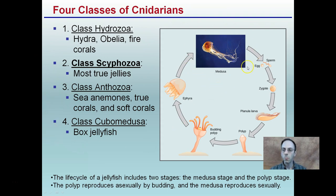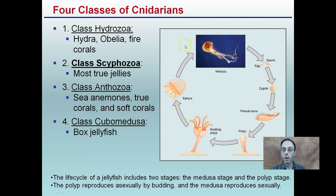Ever wonder how a jellyfish reproduces? We kind of see them floating around in the ocean near the beach. The life cycle of the jellyfish includes two stages: the medusa stage and the polyp stage. The polyp reproduces asexually by budding, while the medusa reproduces sexually. You can see that life cycle going around — budding from the polyp, with the individual organism originating from there.